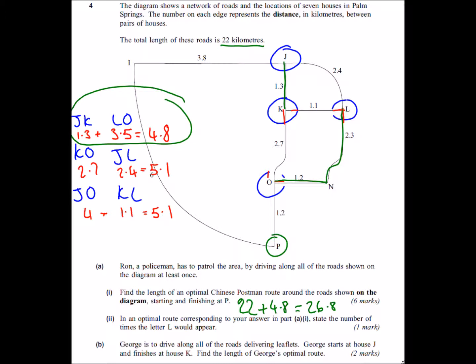In an optimal route corresponding to your answer in part A, state the number of times the letter L would appear. So what we need to think is I'm going to go into L and I'm going to go out to L and then I'm going to go into L and because we're going along this road twice, I'm going to go out to L.